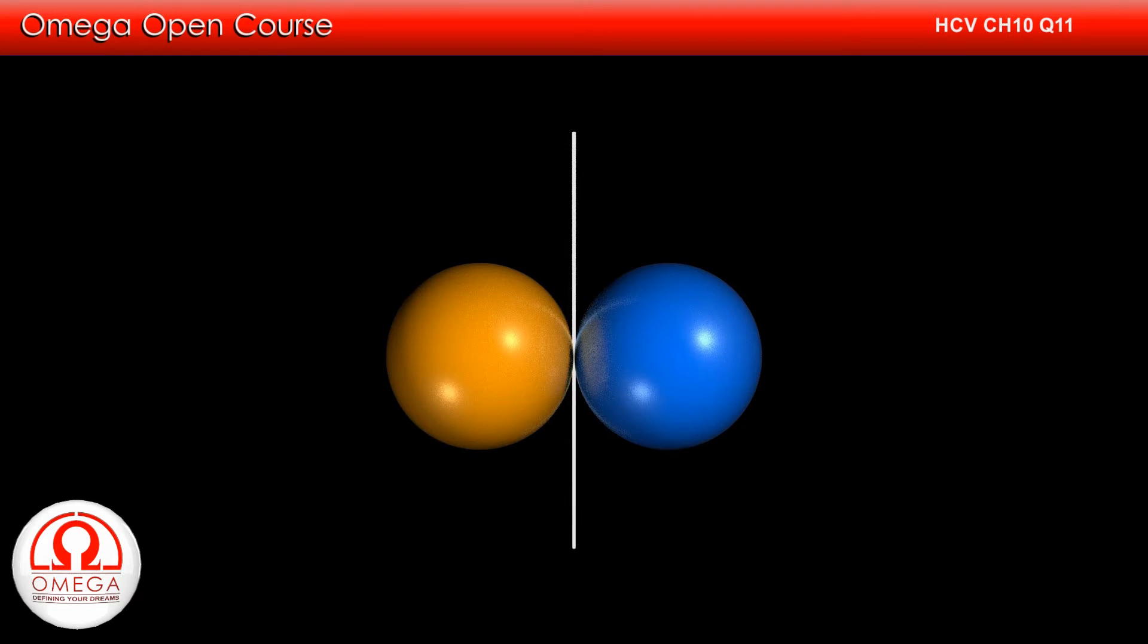Let us denote the moment of inertia of each of the spheres about the given axis to be I and the moment of inertia of the sphere about an axis passing through its center of mass by I₀.